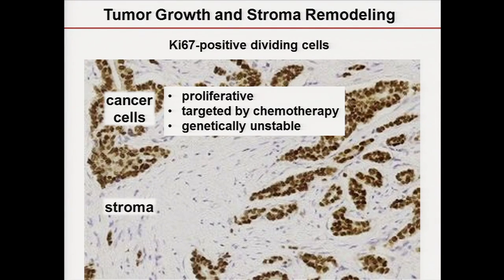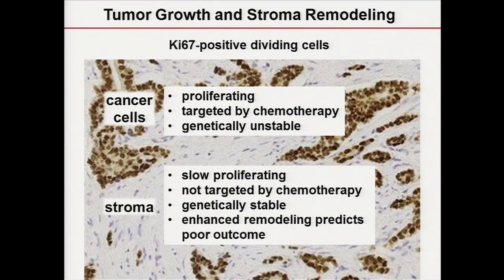Another distinction is that cancer cells are very genetically unstable, which is a problem with chemotherapies because of their flexibility and genomic instability — they quickly readapt and start using different pathways. This is not the case with stroma. Stroma is slow proliferating, not directly targeted by chemotherapy, and is genetically stable. Being genetically stable means we may use it to our advantage when targeting it, as genetically stable cells are not capable of redefining themselves as quickly as cancer cells. They are just as important as genetic alterations in tumor progression.